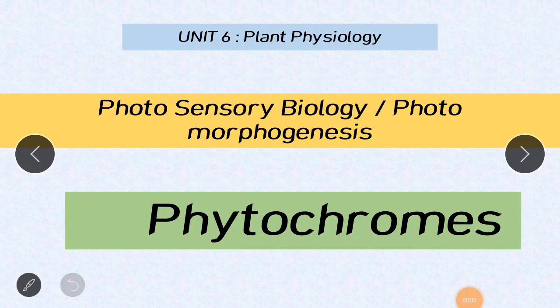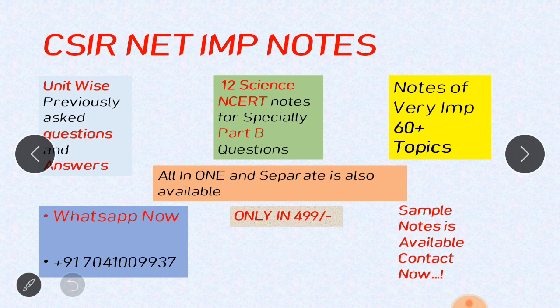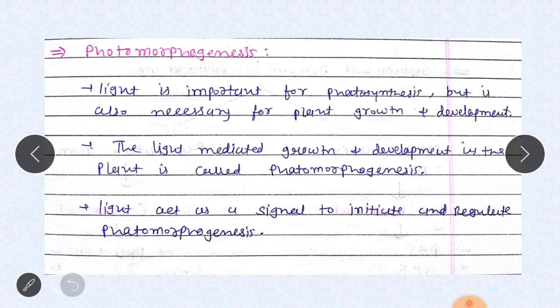Hello friends, in today's lecture we are going to talk about Unit 6, especially photosensory biology, in which we are going to talk about phytochromes, which is an essential photoreceptor in plants for photomorphogenesis.